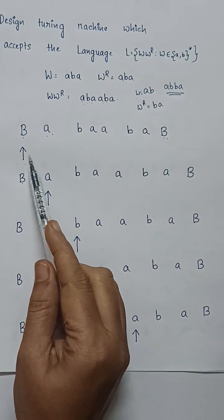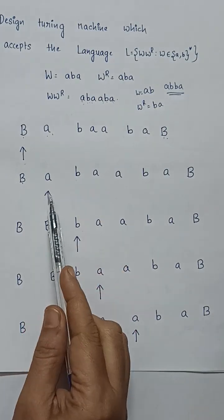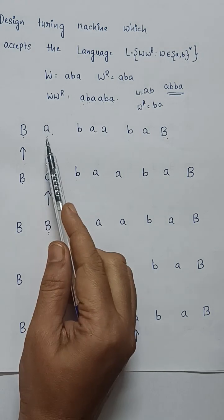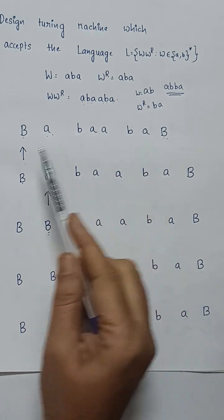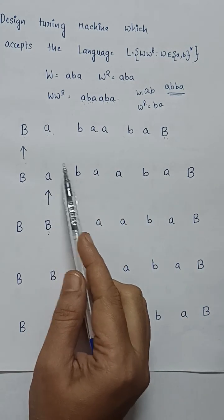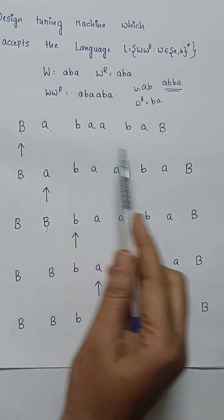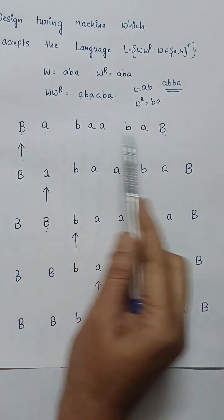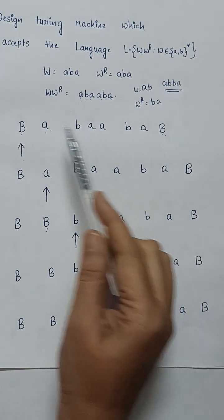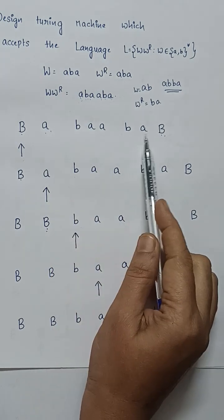The read-write header can only move one step to either right or left. It can't directly jump from one 'a' to another 'a'. That's why it will move one input symbol at a time. The B's are the blank symbols to keep track of the first input symbol and last input symbol of the string.